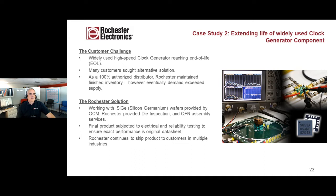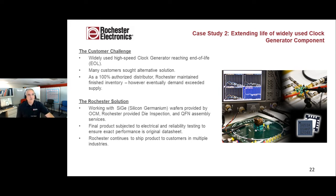Another case study is a clock generator component that was reaching end of life. It was a CIGE product — wafers were sent to us and we did a QFN on that one. My group right now is working on a Cypress CY7C992, which is a 5-volt precision clock distributor/clock generator. We worked with Cypress to get the original physical design archive and SPICE models, and we're replicating that product. Several customers are working with us and we're keeping them updated as we go along. We've got our first silicon back right now and we're taking a look at that.